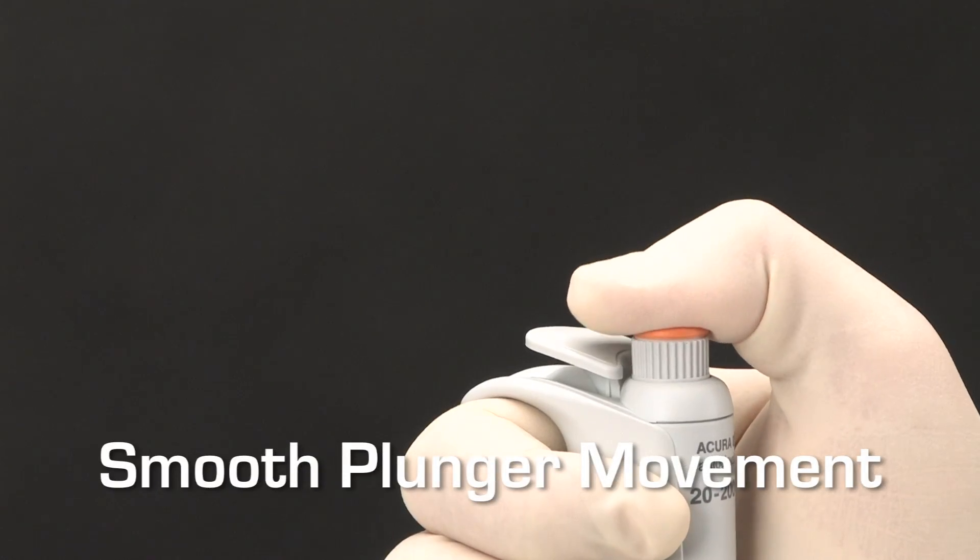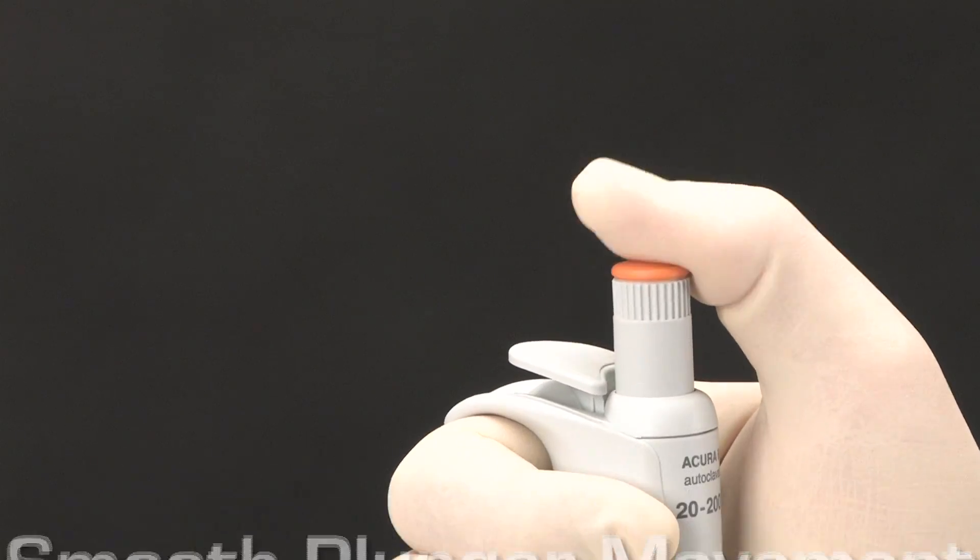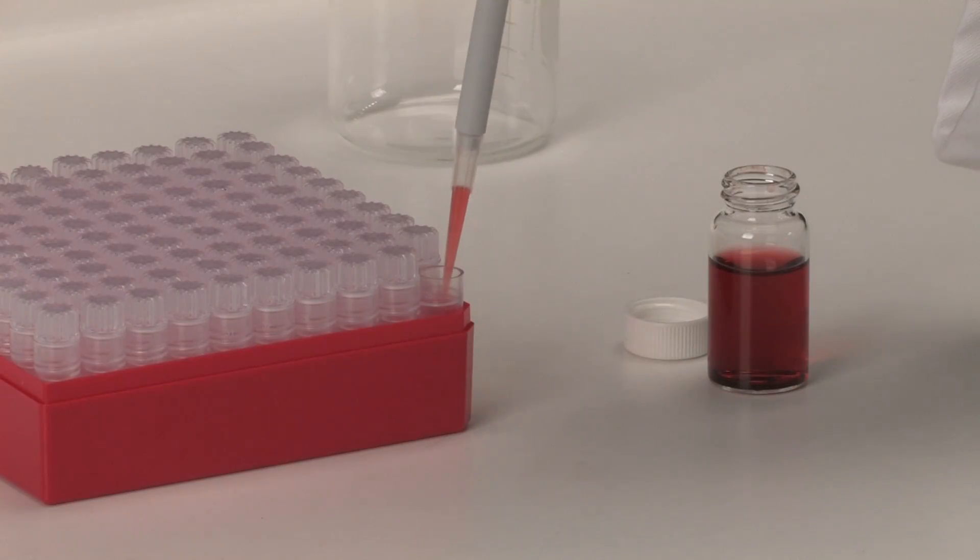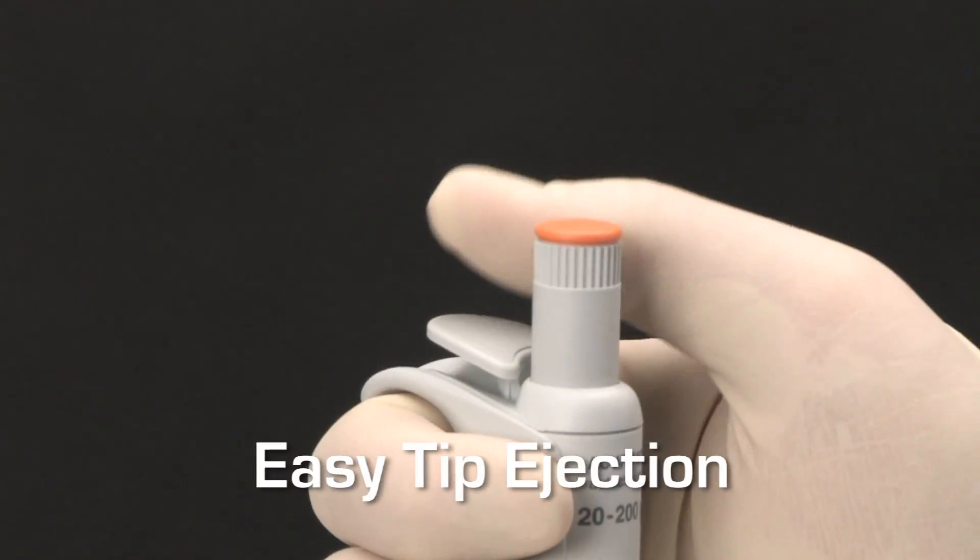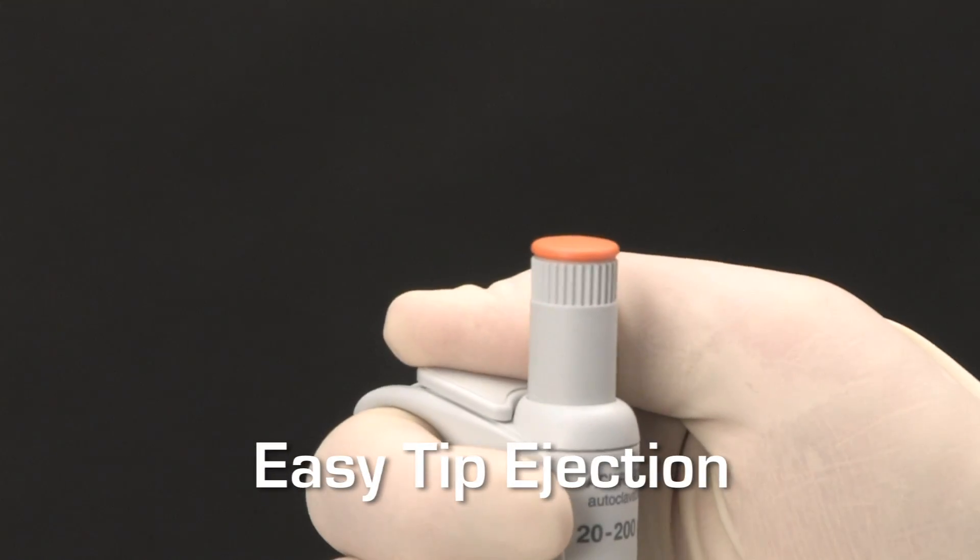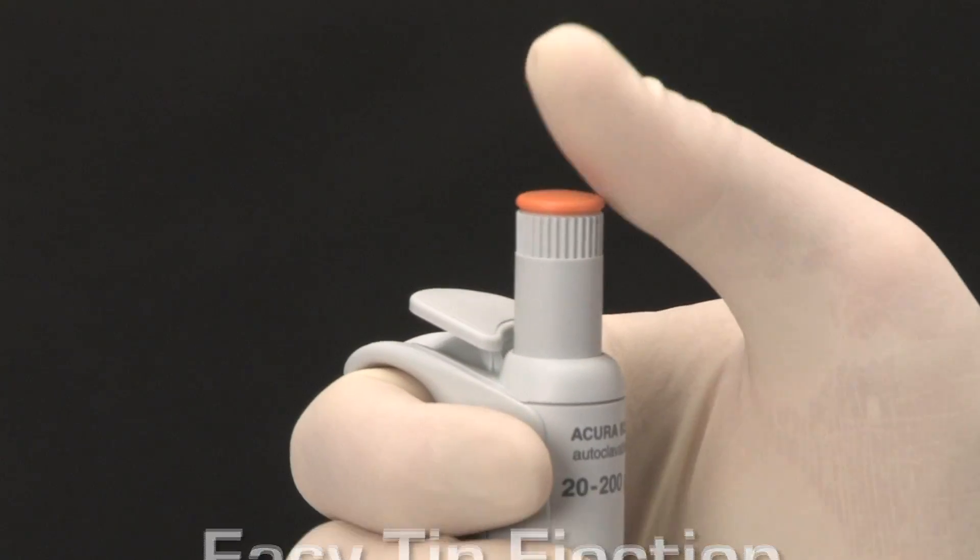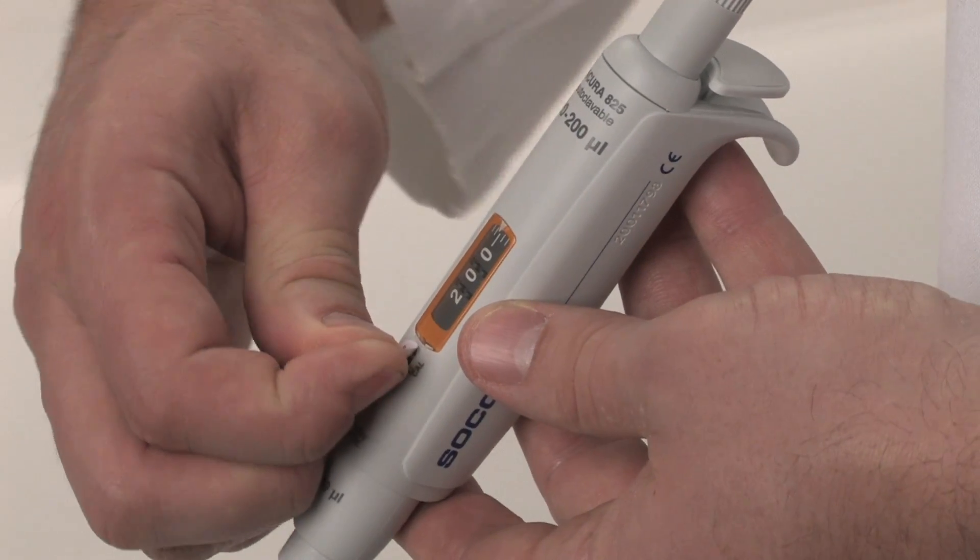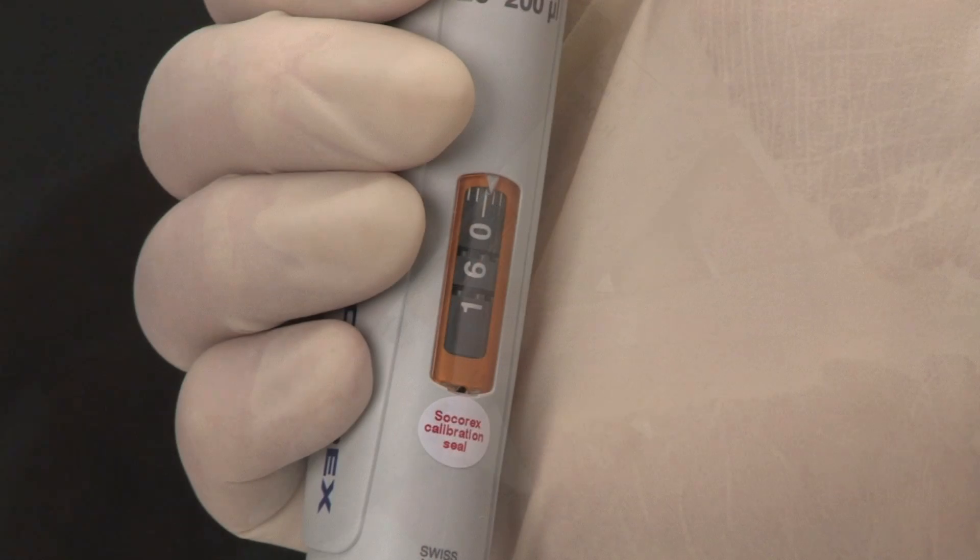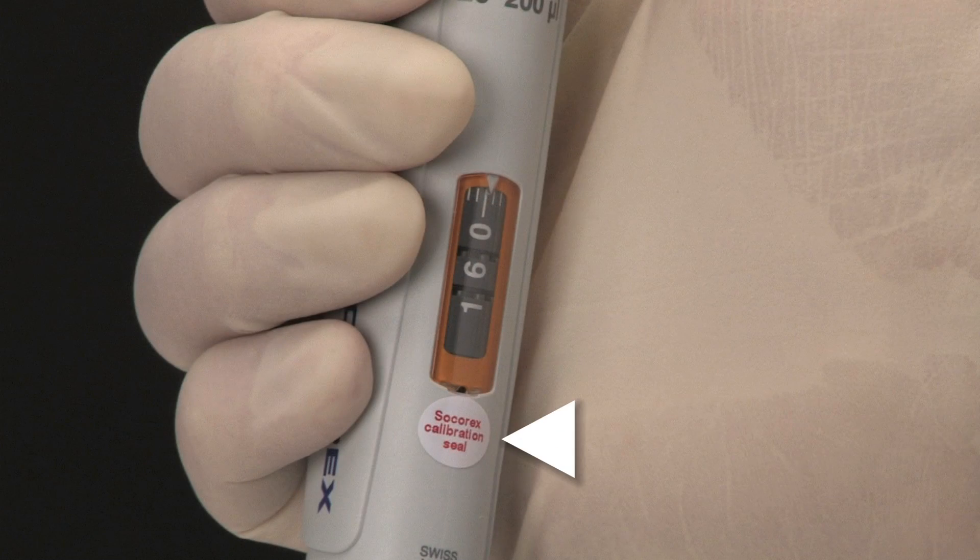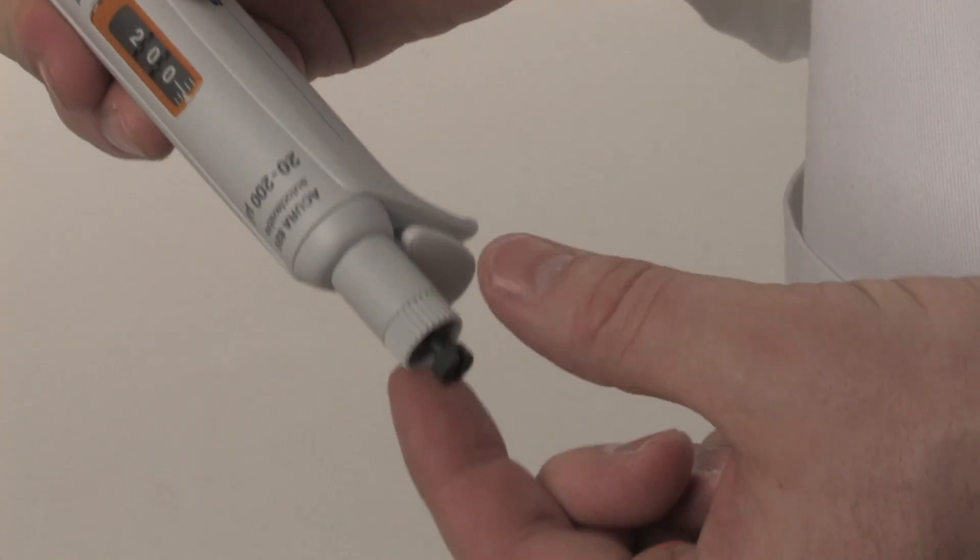The smooth plunger movement enables aspiration and dispensing operations to be performed with minimal effort. Once dispensing is complete, the tip can be easily ejected by pressing the large, soft-padded button. The calibration system enables user-friendly, in-lab calibration. The locking mechanism is protected by a calibration seal sticker. The system also features an integrated key.